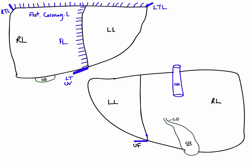Also on the visceral surface of the liver we can see two more lobes. The lobe sitting next to the inferior vena cava is known as the caudate lobe, and the lobe sitting next to the gallbladder is known as the quadrate lobe. We can now see all four anatomical lobes of the liver: the right lobe, the left lobe, the caudate lobe, and the quadrate lobe.